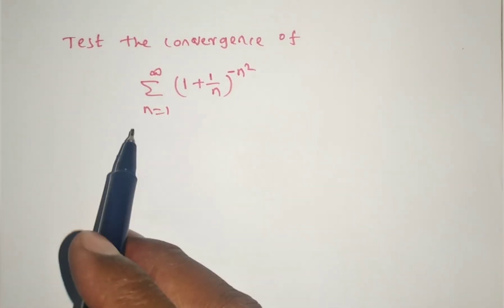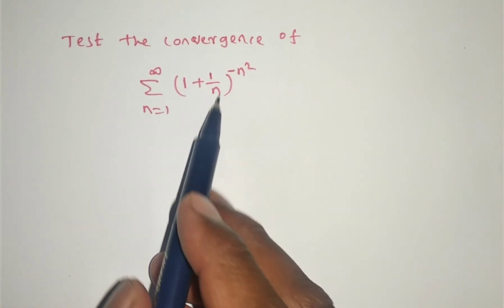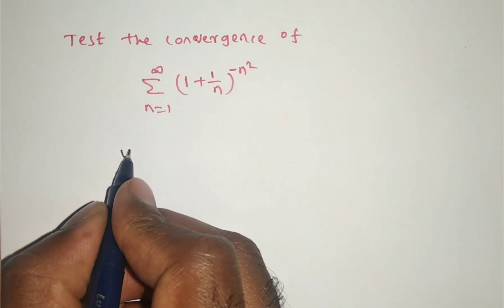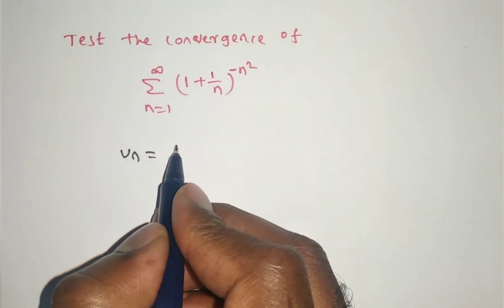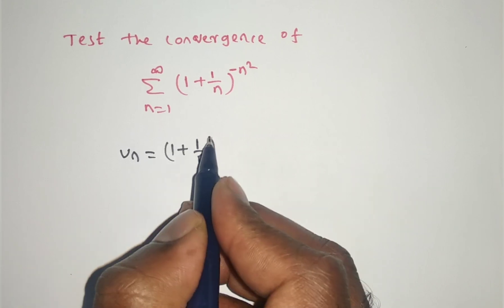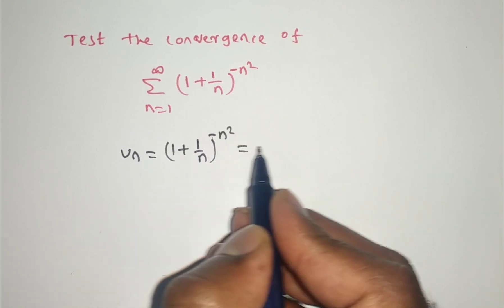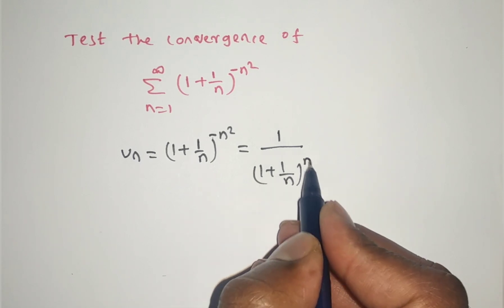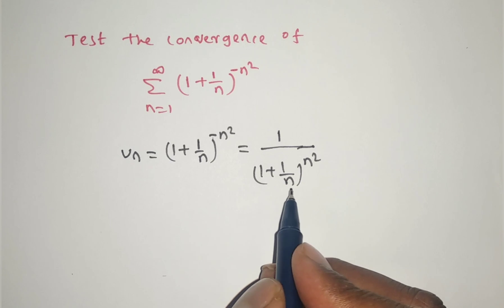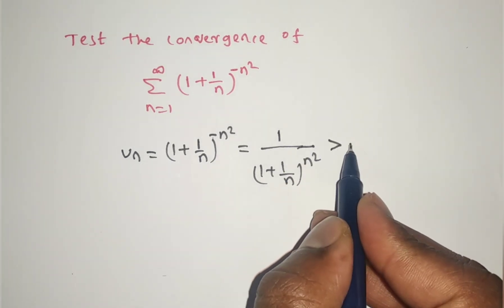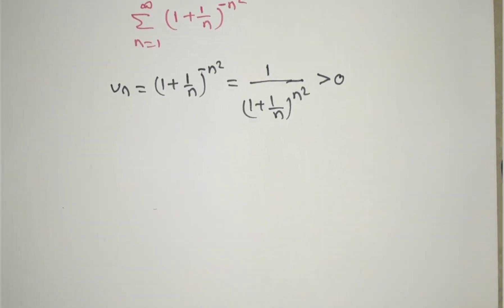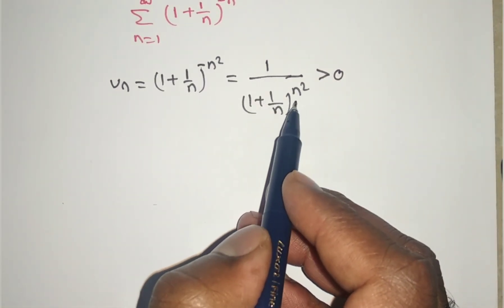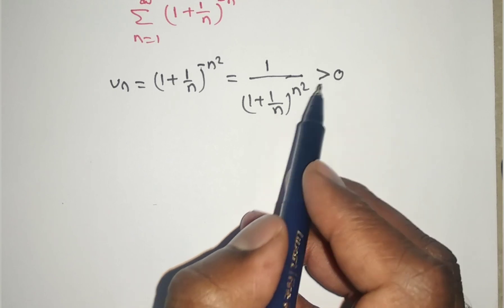Test the convergence of Σ (n=1 to ∞) of (1 + 1/n)^(−n²). The given series: uₙ = (1 + 1/n)^(−n²), which can be written as 1/(1 + 1/n)^(n²). Since the denominator and numerator are both positive, the given series is a series of positive terms. The denominator has power n².